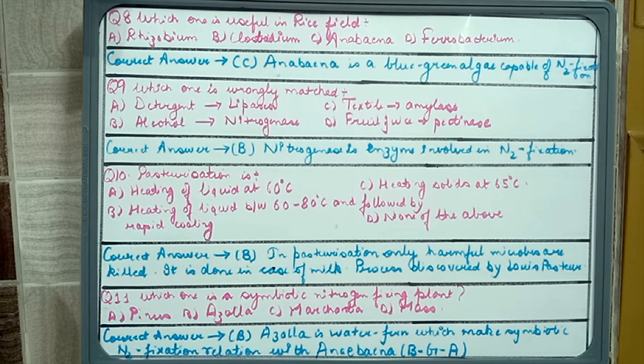Question nine: which is wrongly matched? Detergent lipases, alcohol nitrogenase, textile amylase, fruit juices pectinase. The wrongly matched is alcohol nitrogenase. Nitrogenase is the enzyme which is involved in nitrogen fixation. Rest are correct. We add pectinases in fruit juices so that they appear clearer. Lipases are used in detergent and amylases are used in textiles.